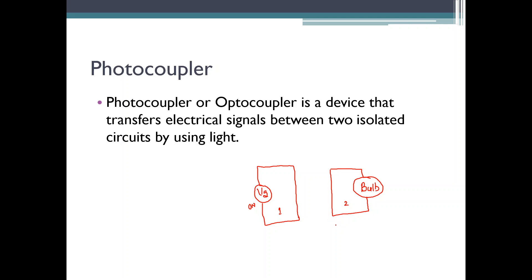The question is: is it possible to build circuits that are electrically isolated, where you have power in one circuit and a device working on that power in a different circuit? The answer is yes — such circuits do exist in the practical world. They can be made to work using a device called a photocoupler, which is also the topic of this video session. Photocouplers or optocouplers are devices that transfer electrical signals between two isolated circuits by using light.